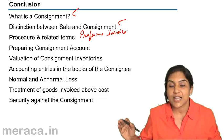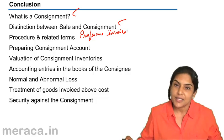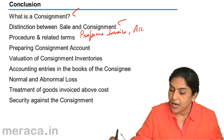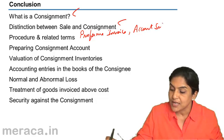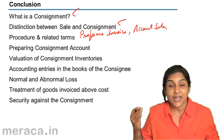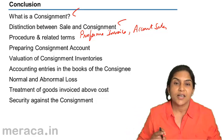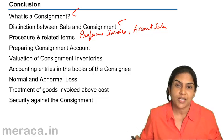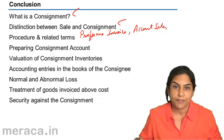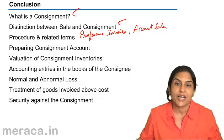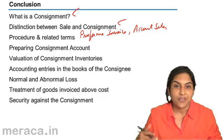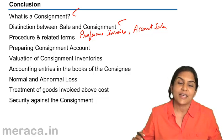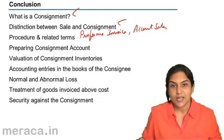Once the sales is effected by the consignee, the consignee sends a statement called the account sales. Account sales is a statement sent by the consignee to the consignor containing details of the sales made, expenses incurred by him, the commission payable to him, the balance of stock held with him, details of any advance already sent by the consignee to the consignor, and the net amount due to the consignor.